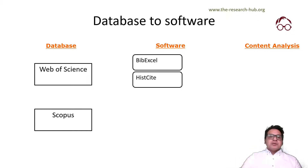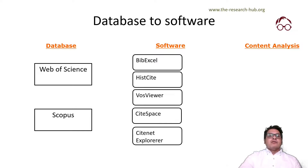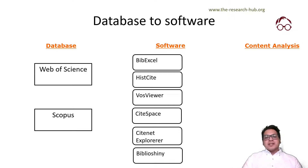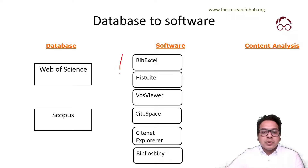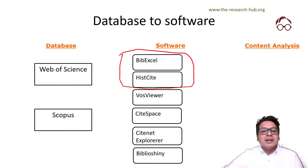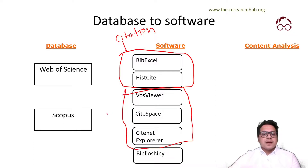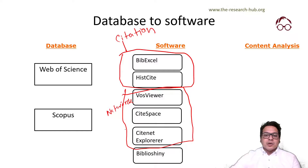In terms of softwares, some common ones include BibExcel and HisCite for citation analysis. Then we have VosViewer, Citespace, and SciNet Explorer for visualization and network analysis. Recently, BiblioShiny became very popular for visualization and citation analysis. BibExcel and HisCite mainly provide citation-based analysis only, while VosViewer, Citespace, and SciNet Explorer mainly provide visualization and network analysis — co-citation, co-bibliographic coupling, and so on.